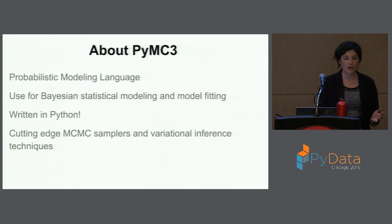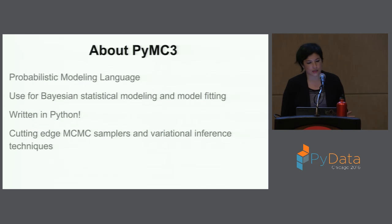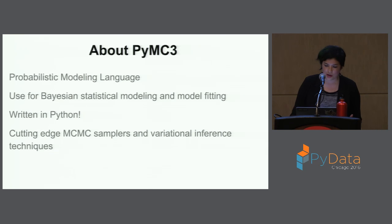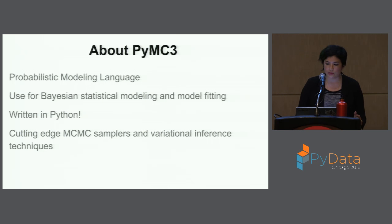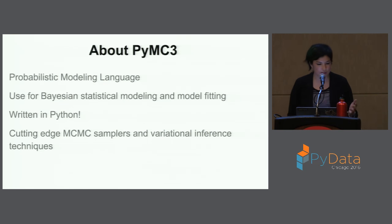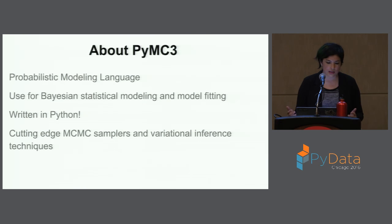I don't know how many of you are familiar with PyMC3. It's a Markov chain Monte Carlo sampling library, and some of the main features are that it allows you to do probabilistic programming. The way I like to think about it is that it allows us to treat our parameters in regression problems as arising from distributions rather than just point estimates. This allows us to insert prior knowledge into the model and gives us some idea of the error of our point estimates. You can use it for Bayesian statistical modeling and model fitting. It's written in Python, and PyMC3 usually has cutting-edge sampling algorithms and variational inference techniques.